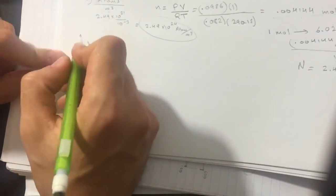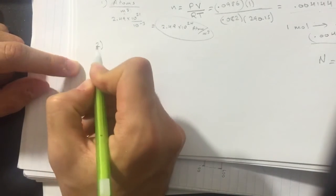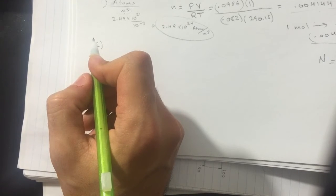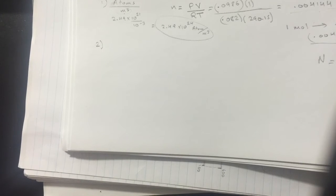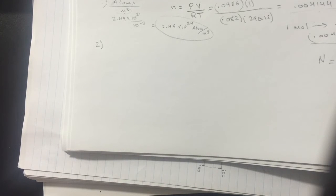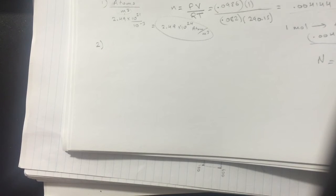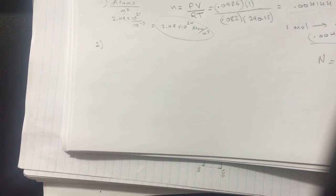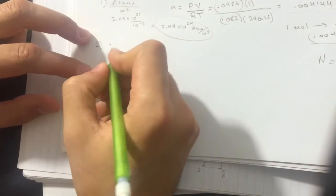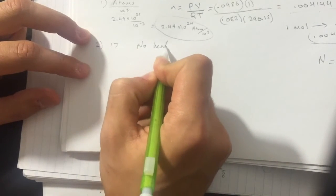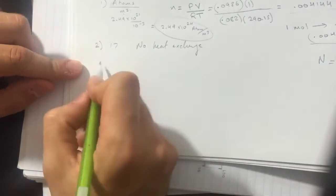Number two: the chamber opened and the gas expanded to 2 times 10 to the negative 3 cubic meters — roughly doubled. The gas does no work because molecules have nothing to push on. After the gas re-equilibrates without exchanging heat with the outside, what is the new temperature? Since there was no heat exchange, the temperature stays the same — it's still 17 Celsius.